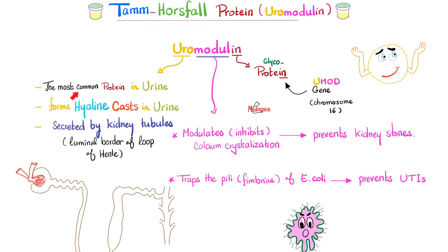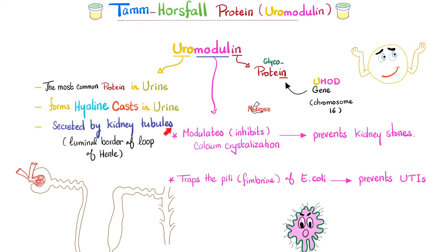Uromodulin is secreted by the kidney tubules, mostly around the loop of Henle at the luminal border. So just because you see TAM Horsfall in the urine doesn't necessarily mean the kidney is bad — because the tubules themselves made it. Do not blame the basement membrane, do not say the negative charges have been destroyed or the fenestrations are wide open. You could have a perfect kidney and still have some TAM Horsfall protein in the urine, because it was made after filtration, by the kidney tubule cells.